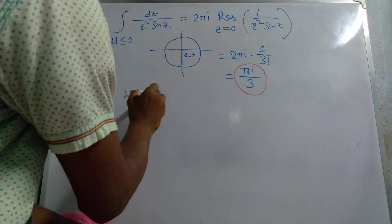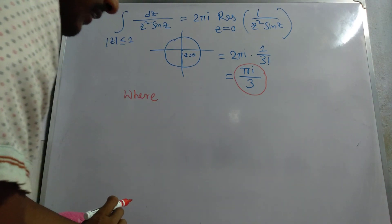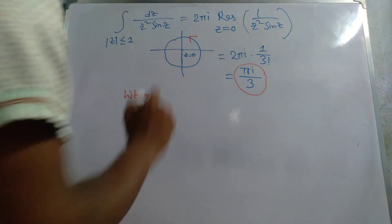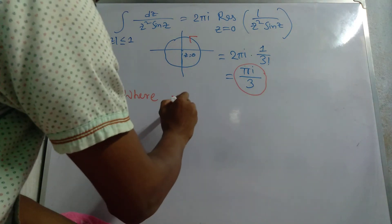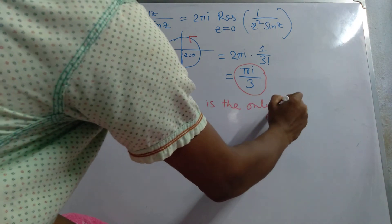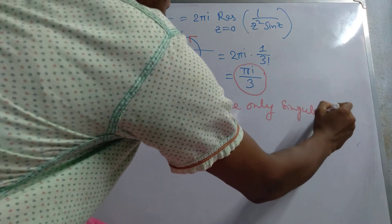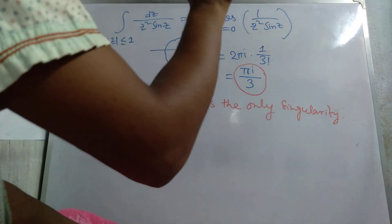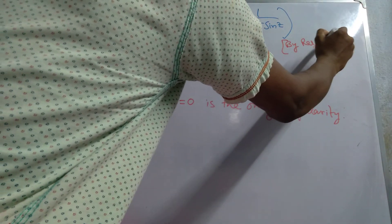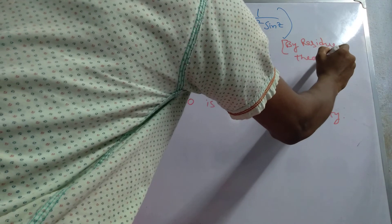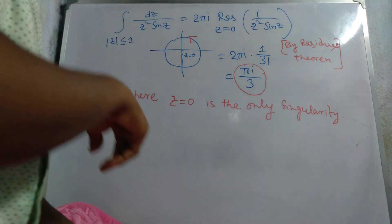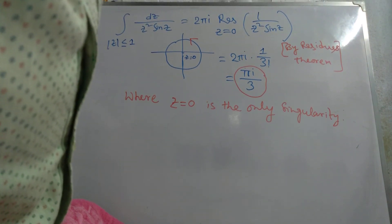Here we consider a positively oriented circle, and z = 0 is the only singularity inside it. So by the residue theorem, today we are done with this problem.